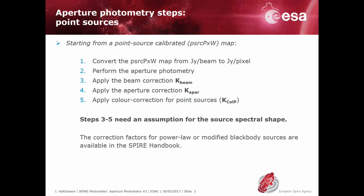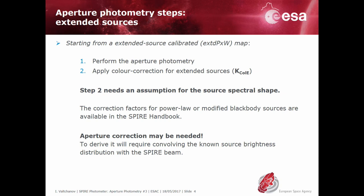Next, the measured flux density has to be corrected for the actual source spectral energy distribution. By convention, the pipeline maps are calibrated for a source with a power-law spectrum with power-law index of minus one. The beam correction is needed to take into account the conversion from flux per beam to flux per pixel for the source spectrum. The aperture correction is simply the correction for the missing flux outside the aperture, assuming a point source. Finally, the last correction is the color correction for the actual spectral shape. All these corrections are explained in great detail in the SPIRE handbook and are tabulated for sources with power-law or blackbody spectral shapes.